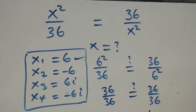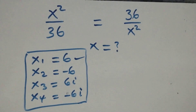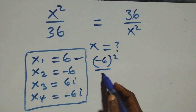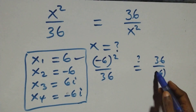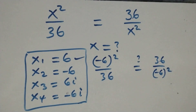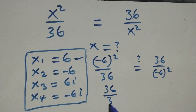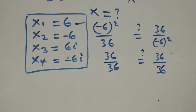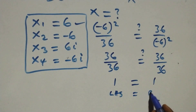Also solving for x = −6: the equation becomes (−6)² over 36. Is this equal to 36 over (−6)²? Squaring turns the negative to positive, so 36 over 36 equals 1 on both sides. Left hand side equals right hand side, so x = −6 also satisfies the given problem.